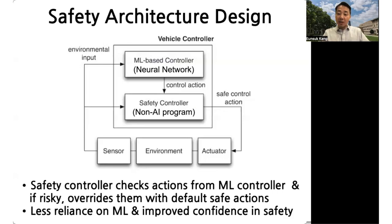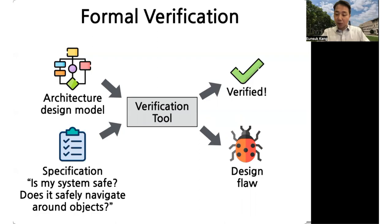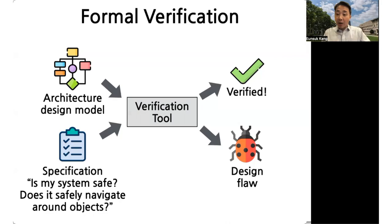Once you have designed the architecture, the next step is to analyze it to make sure it is safe. For this, we apply a technique called formal verification. A verification tool takes a model of the architecture design and a specification describing what it means for the system to be safe — for example, that the vehicle will safely navigate around objects on the street. The tool then applies mathematical analysis to verify whether the design is indeed safe. If not, it produces output describing possible flaws in the design, and the developer can fix the architecture and apply verification again until the design is confirmed safe.